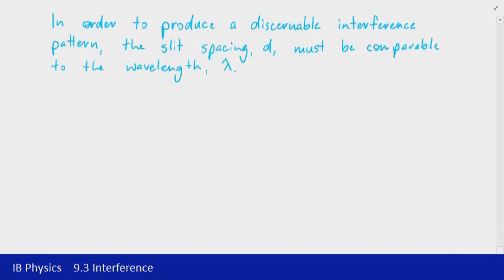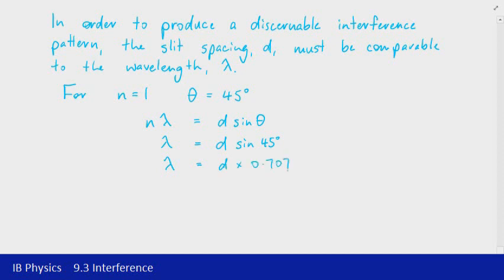And as an example, let's imagine we're considering n being equal to 1, and we want the interference pattern to be no wider than about 45 degrees. So that means if we look at the equation n lambda is equal to d sin theta, substituting those two values, so n is equal to 1, so that term effectively disappears, that leaves us with d sin 45 degrees. So lambda is equal to d multiplied by 0.707. So that means that the spacing needs to be about 1.41 times the wavelength. So in order to get that 45 degree separation of the first order bright region from the central bright region, the spacing of the slits needs to be 1.41 times the wavelength.